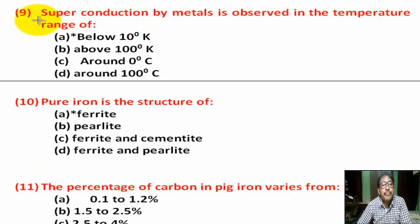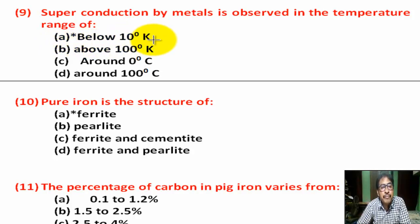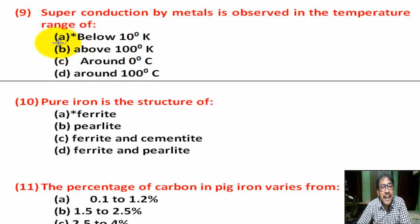Question number 9: Superconductivity by metals is observed in the temperature range of — Option A: below 10 Kelvin. Option B: above 100 Kelvin. Option C: around 0°C. Option D: around 100°C. Correct answer is Option A — below 10 Kelvin.